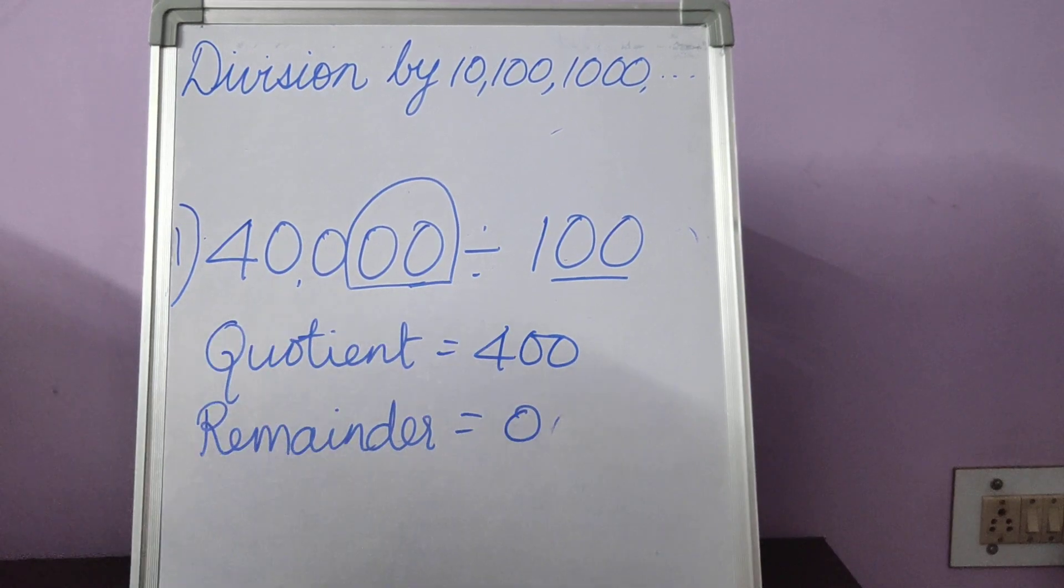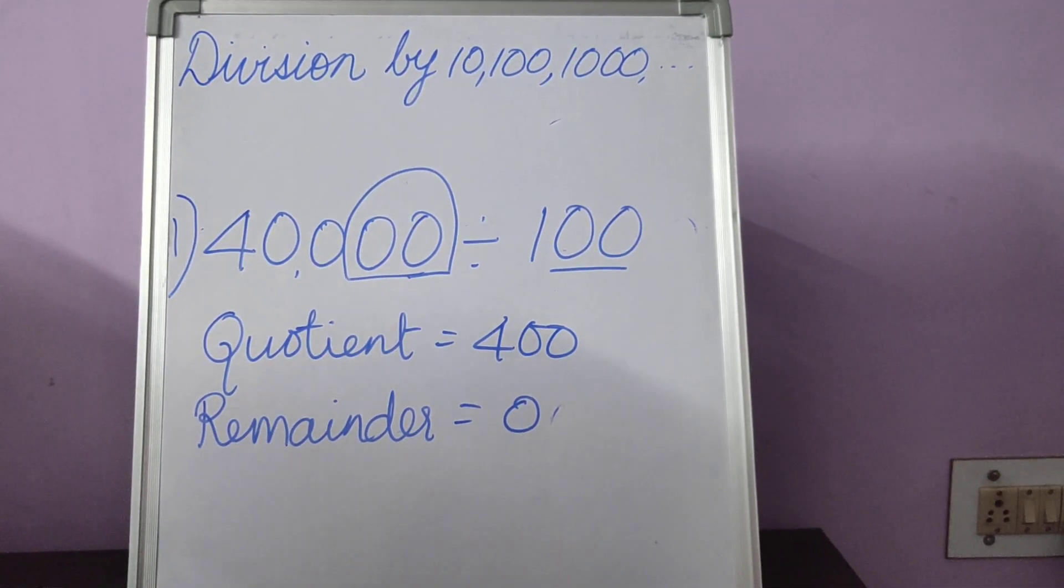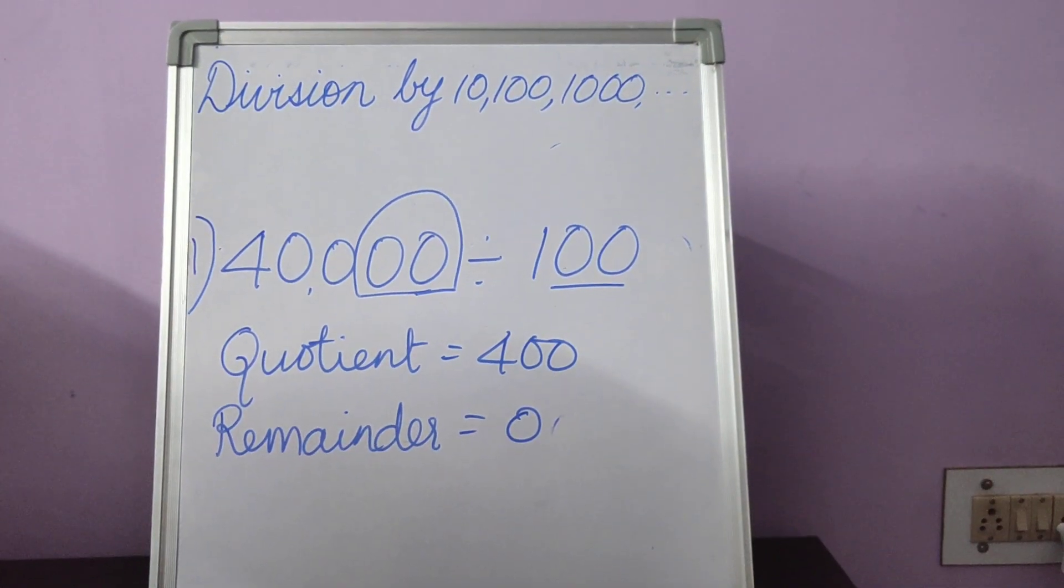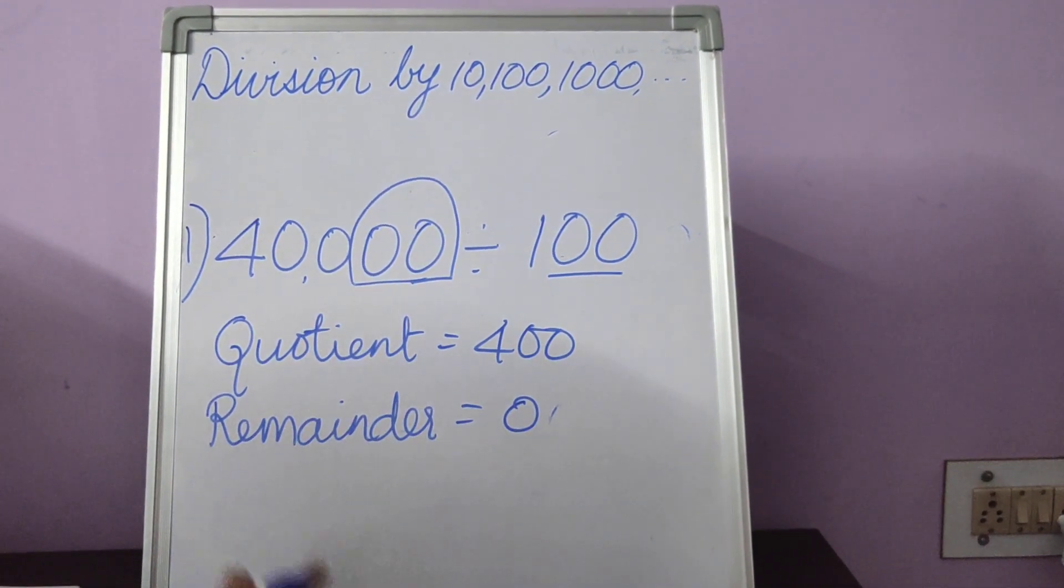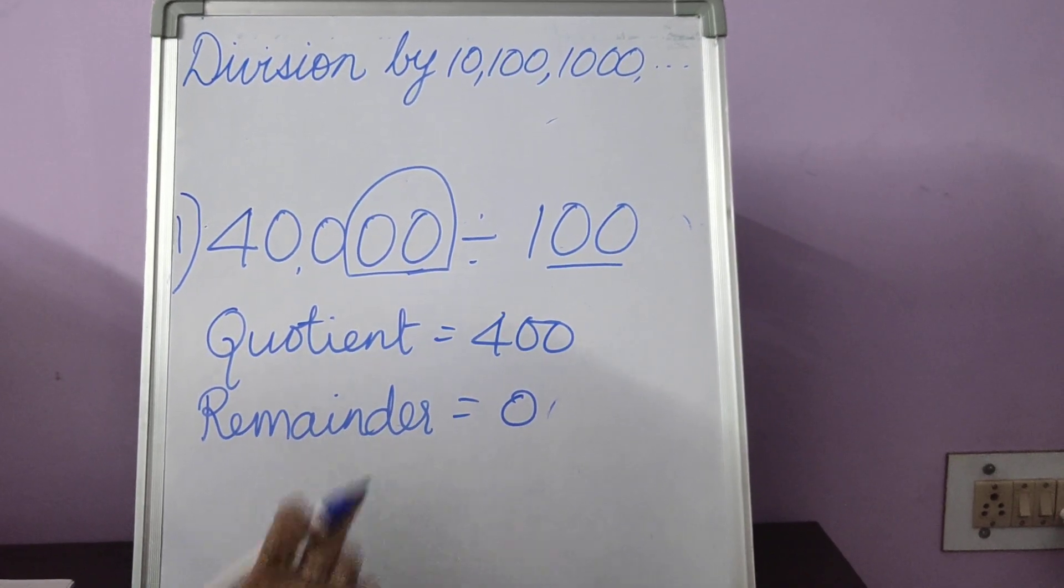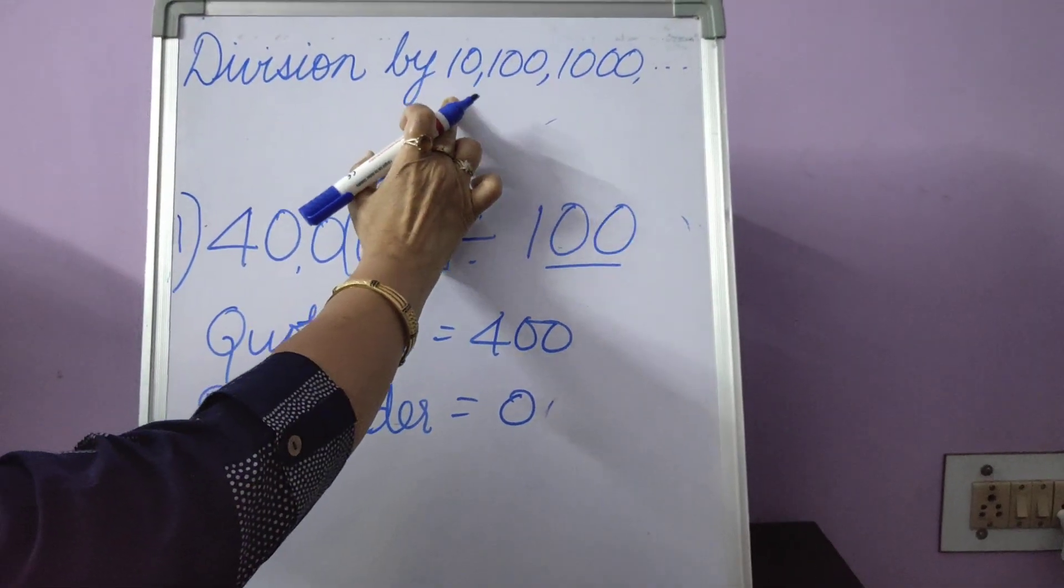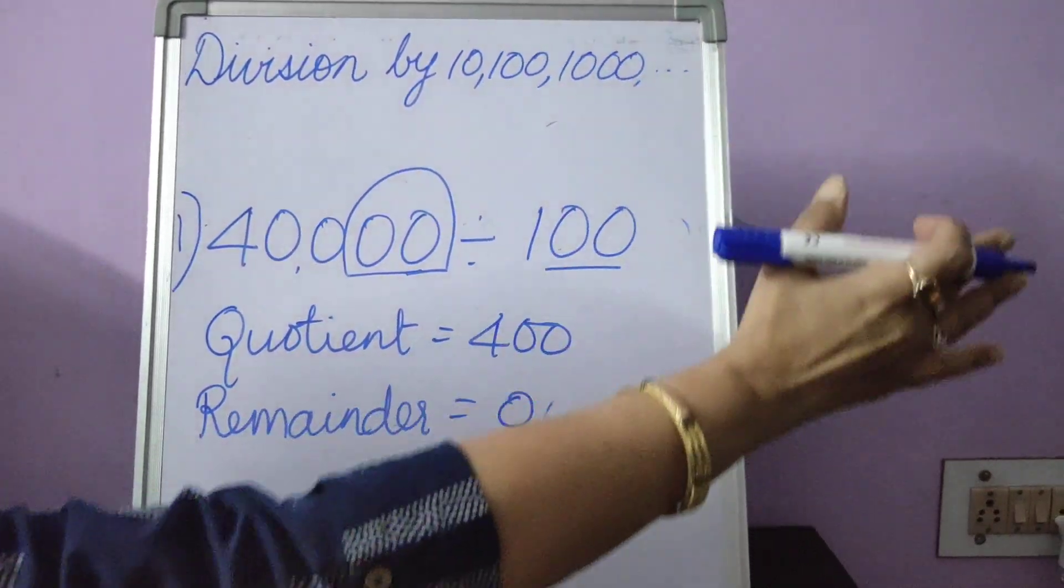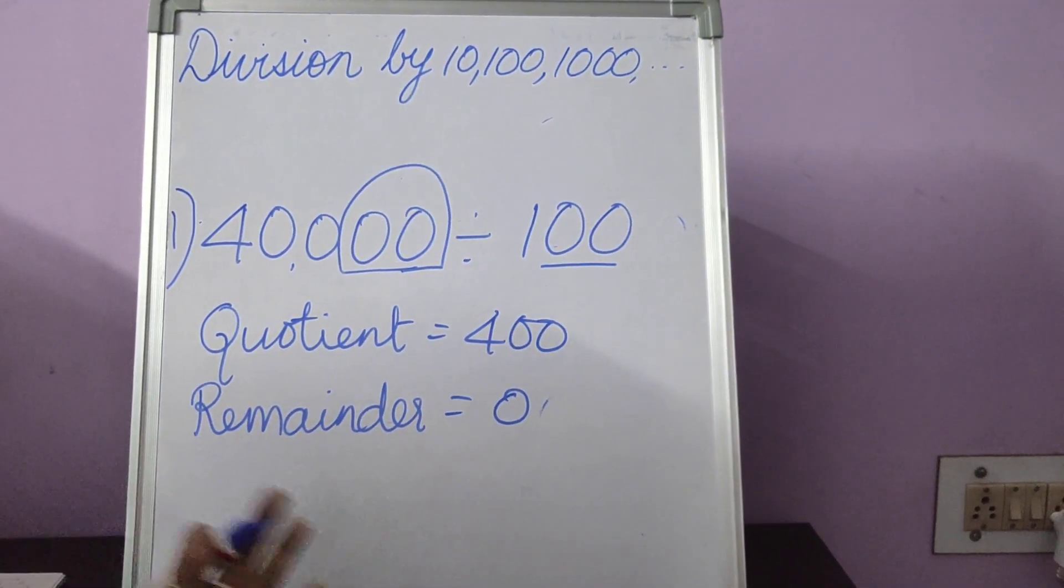But you only need to remember one thing. And that is, this very short method that we are doing of division and just counting the places can be done and is done only when we are dividing either by 10, 100, 1000, 10,000, lakh, so on and on.